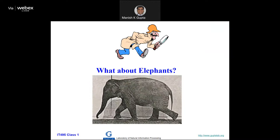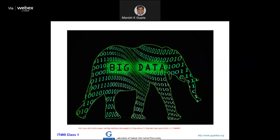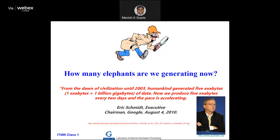We were talking about elephants — meaning big data. How many elephants are we generating? Eric Schmidt, former executive chairman of Google, said that from the dawn of civilization until 2003, humankind generated five exabytes of data — one exabyte equals one billion gigabytes, in the order of 10^18. Now we produce five exabytes every two days. That estimate was from 2010, twelve years ago. Currently every day we generate a couple of exabytes. The current size of the internet is around 700 exabytes. Where to store all this information is the challenge.